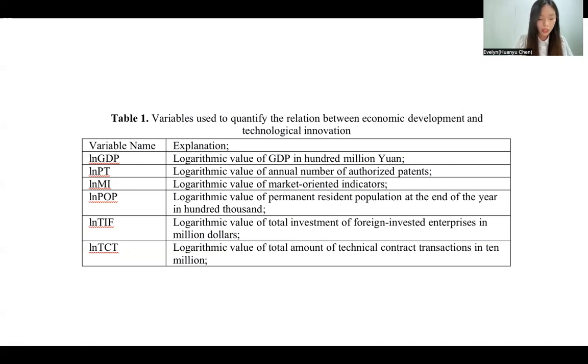Also, I set four control variables. There are the total amount of technological contract transactions, year-end resident population, total investment of foreign-invested enterprises, and marketization indicators. It's also shown in Table 1.